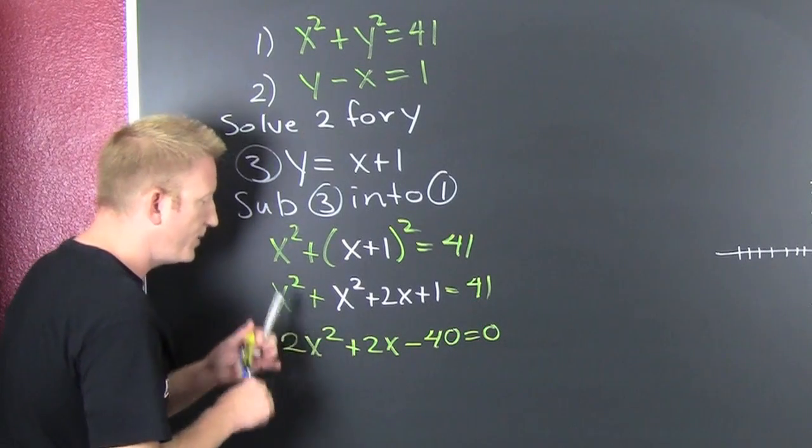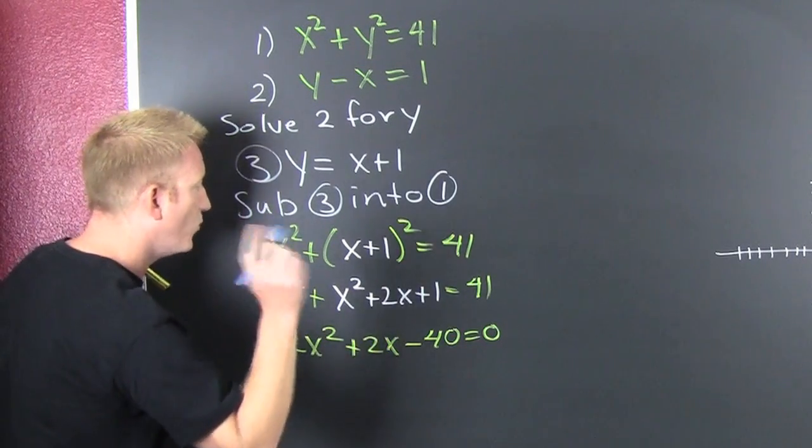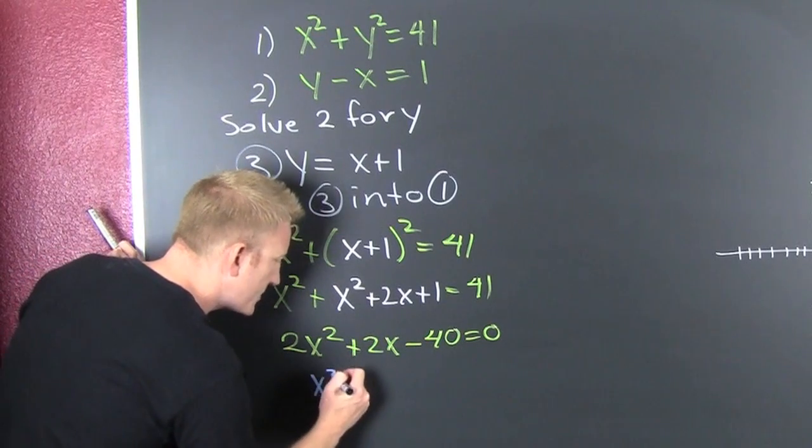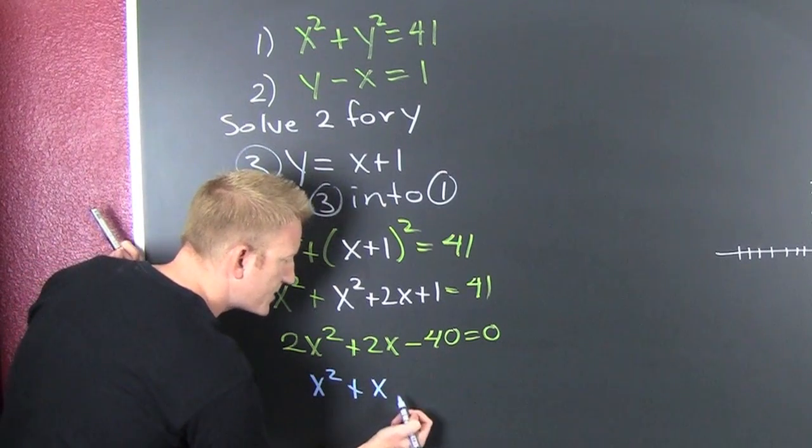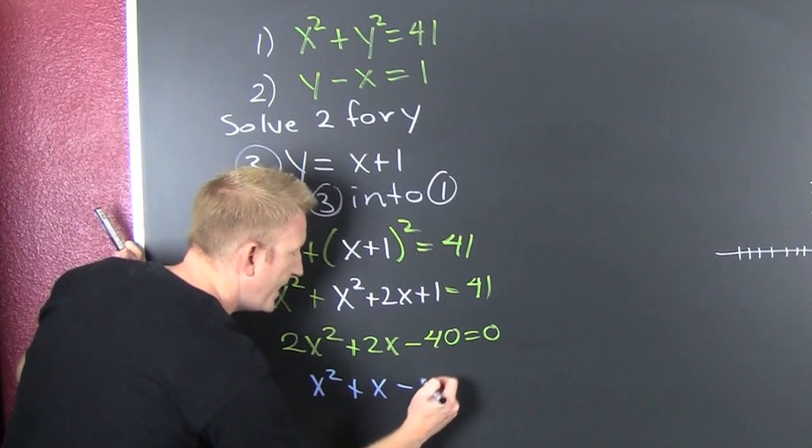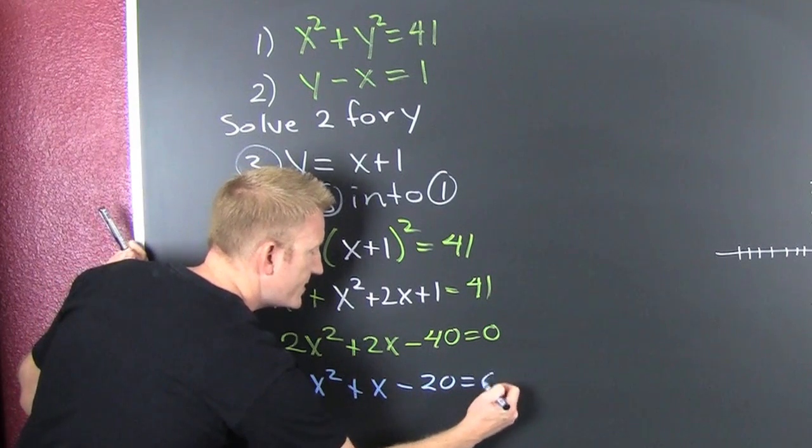I divide you by 2. You by 2. You by 2. And when I do, I have an x squared plus an x minus 20 is equal to 0.